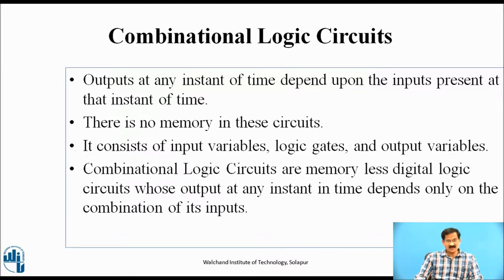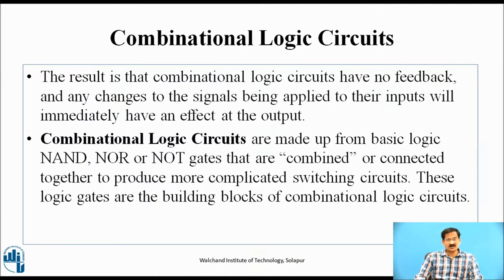Combinational logic circuits have no feedback, and any changes to the signals being applied to their inputs will immediately have an effect at the output. Combinational circuits are made up from basic logic gates — NAND gates, NOR gates — that are combined or connected together to produce more complicated switching circuits. These logic gates are the building blocks of combinational logic circuits. In summary, the combinational logic circuit does not require a memory element, it does not have feedback, and the output will be present only when the input is present.